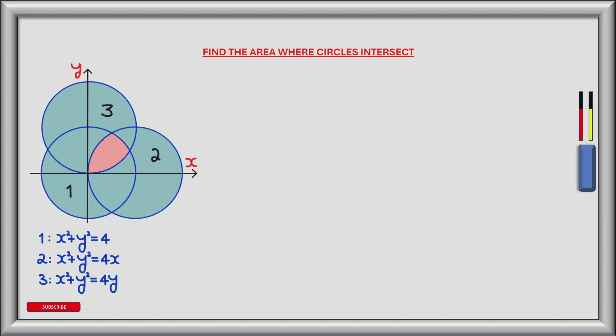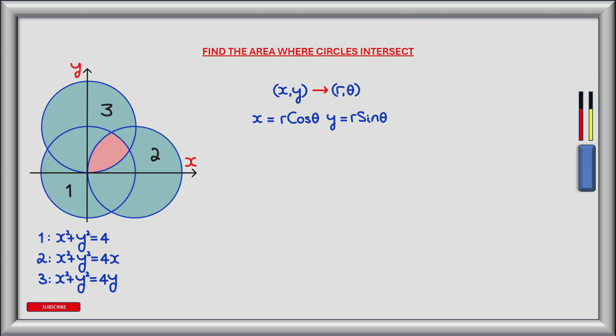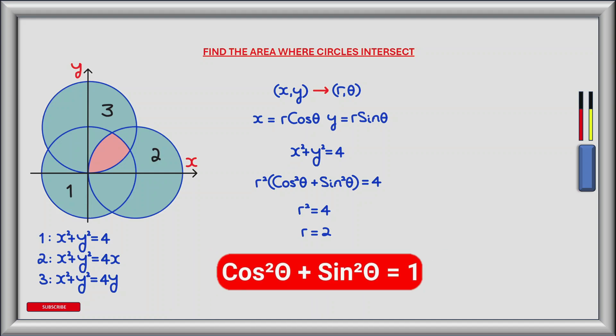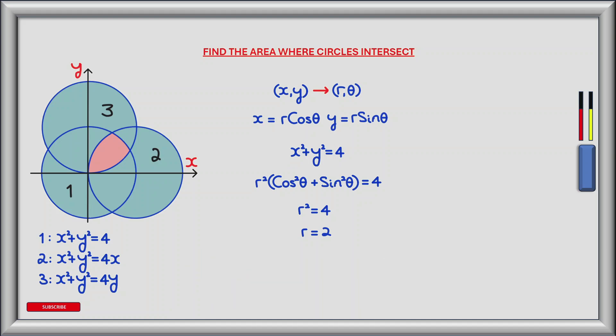The first step in finding the area is to convert the equations of each circle from Cartesian coordinates to polar coordinates. To do this we'll substitute r cos theta for x and r sin theta for y. So for circle 1, where x squared plus y squared equals 4, making this substitution gives r squared times the bracket of cos squared theta plus sin squared theta equals 4. Using the trig identity where cos squared theta plus sin squared theta equals 1, we have r squared equals 4, and taking the positive square root gives r equals 2.